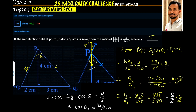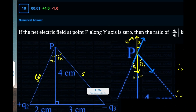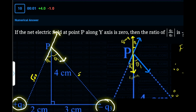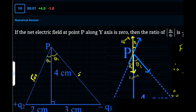We have two charges. The second charge is positive, so the electric field will point away from it, and Q3 is negative, so the electric field will point towards the negative charge. We can see the angles are different. For this field, the electric field is pointing in this direction, and if we extend this line, we get angle theta here.